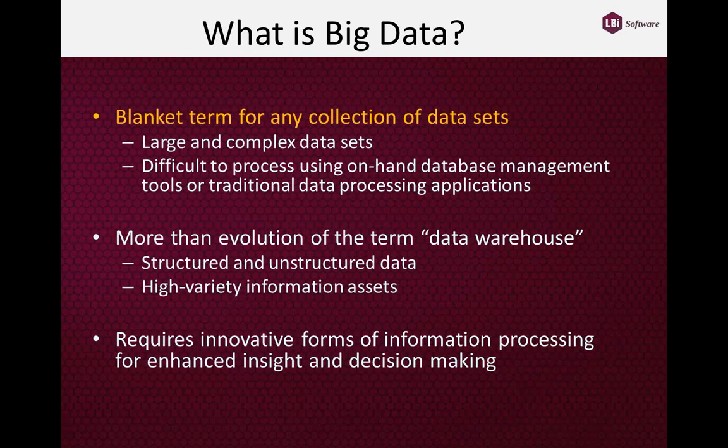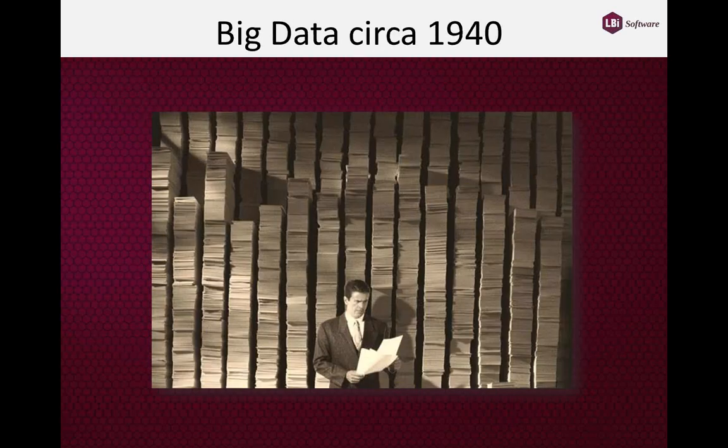For today, when you hear the term big data, we're really referring to multiple data sets. Big data has been around for a long time — long before computer technology. What did big data look like prior to the advent of computers? Very large organizations like banks and government agencies like the Internal Revenue Service — this is really what their data looked like before mainframe computers came along. It's amazing that they were able to manage working with large pieces of information from multiple data sources, but they had good filing systems and survived until computers came along.